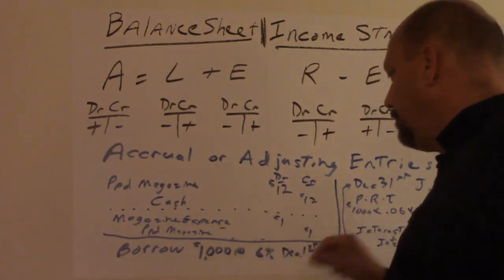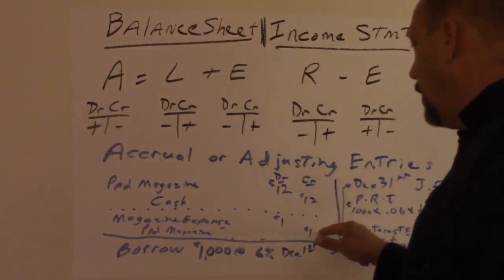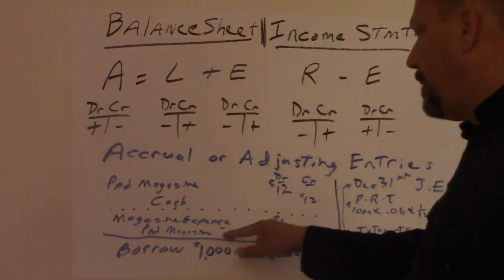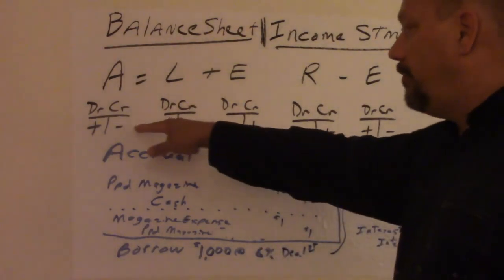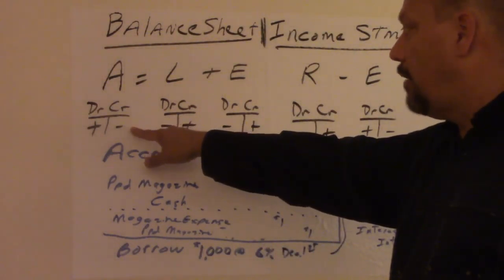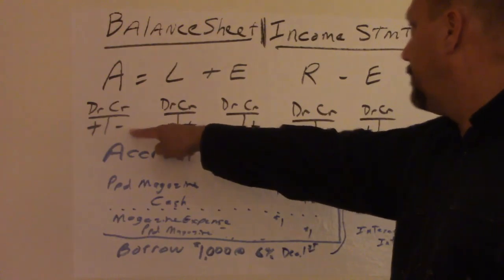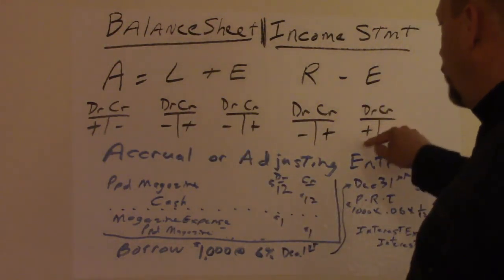And the prepaid magazine expense, or if you did just prepaid magazine, then you just call it prepaid magazine. And that's also a dollar. And this one's a credit. The prepaid magazine is the asset. It's a credit because the asset went down. So assets went down, credit, and expenses went up.